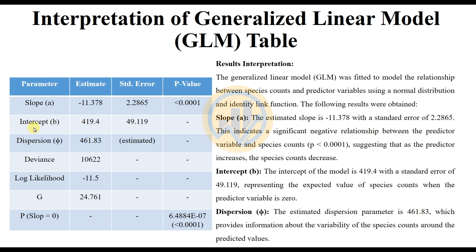The intercept of the model has an estimated value of 419.4 with a standard error of 49.119, representing the expected value of the species count when the predictor variable is 0.